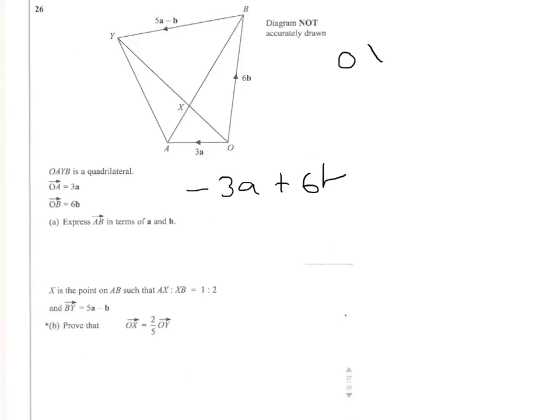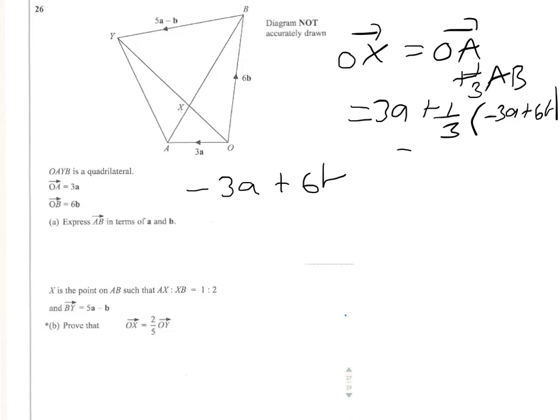So OX equals OA plus AB. So that will be 3a plus, now, sorry, I should have said one third AB, one third AB. So plus one third of minus 3a plus 6b. So we'll tidy that up. That gives me 3a minus a plus 2b. And 3a minus a is 2a, 2a plus 2b. So there we have OX.